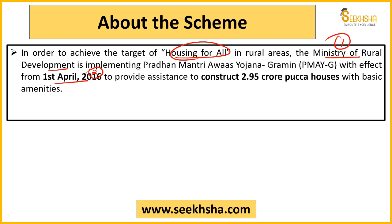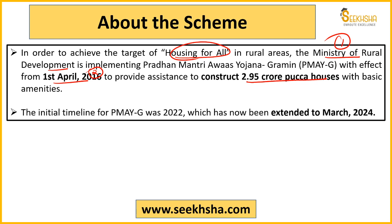When the scheme was started, the target was that 2.95 crore houses would be created in rural areas. These houses would also include basic amenities - whether it is a toilet or water supply, those would also be provided. The initial timeline for completion of this scheme was March 2022.